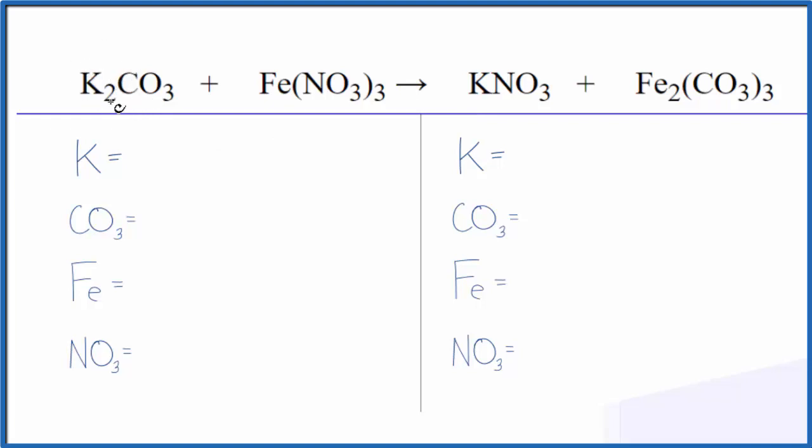So let's count the atoms up. We have two potassium atoms. And then the carbonate—I have a carbonate here and carbonates over here. So I'm going to count that as one thing. It's a polyatomic ion. It stays together in the chemical reaction.